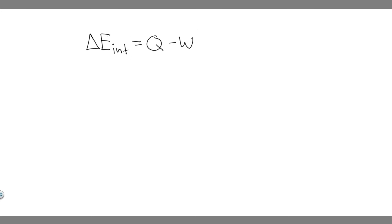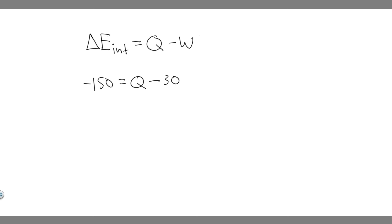So basically in this problem, they tell us that the internal energy is going to decrease by 150 joules, so the change in it is going to be minus 150 — and it's minus because it's decreasing — is equal to Q, minus the work. They tell us while it was doing 30 joules of work. So if the system itself is doing work, we keep it positive, but if something was doing work on the system, it would be negative. In this case, we're going to do minus 30 because the work is positive 30.